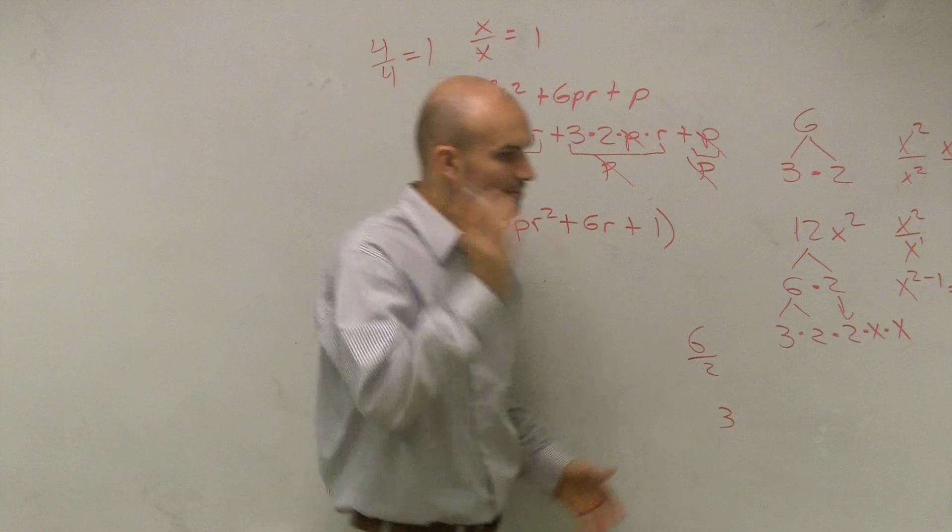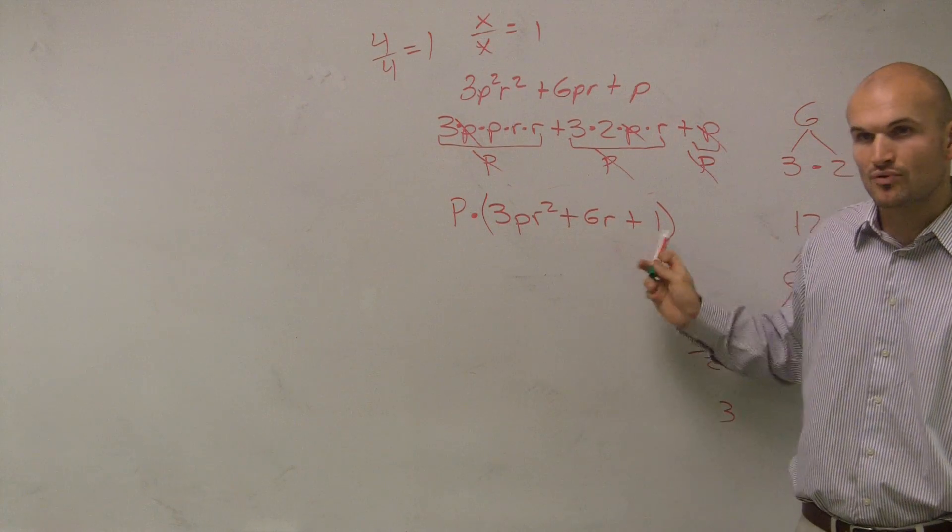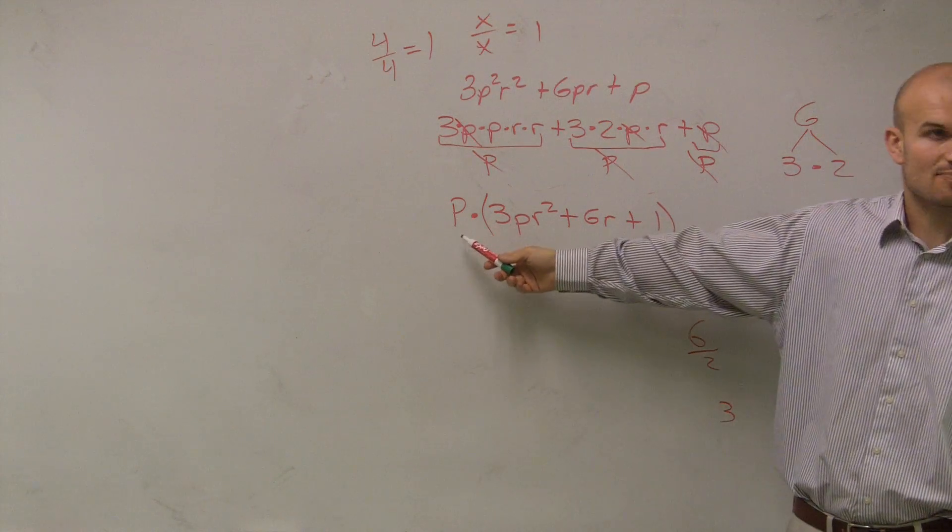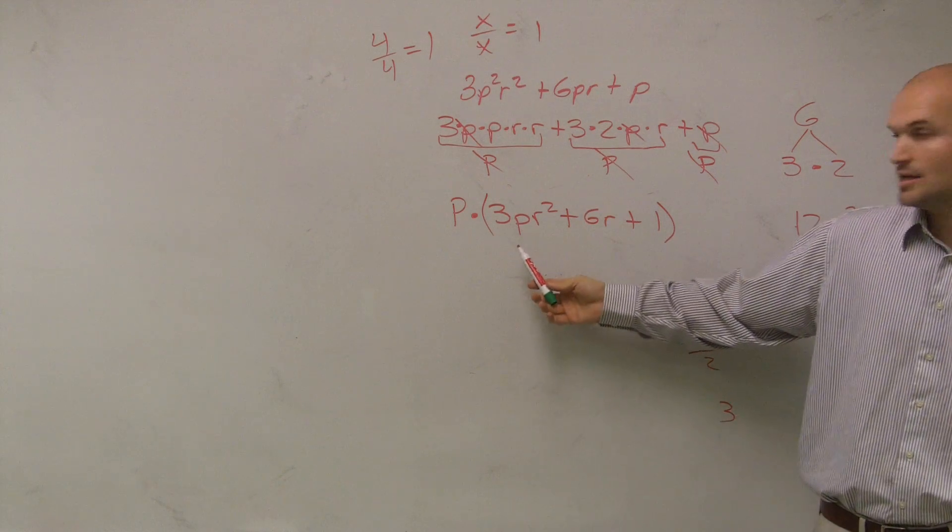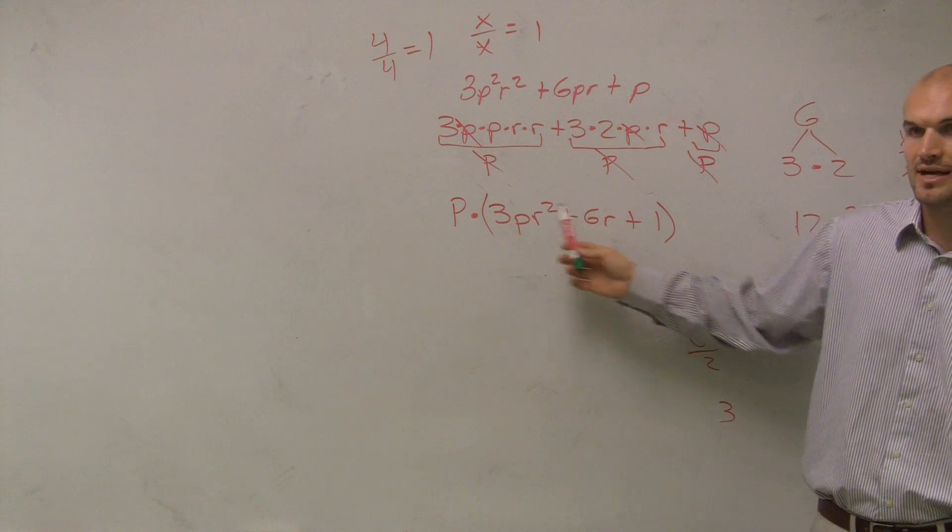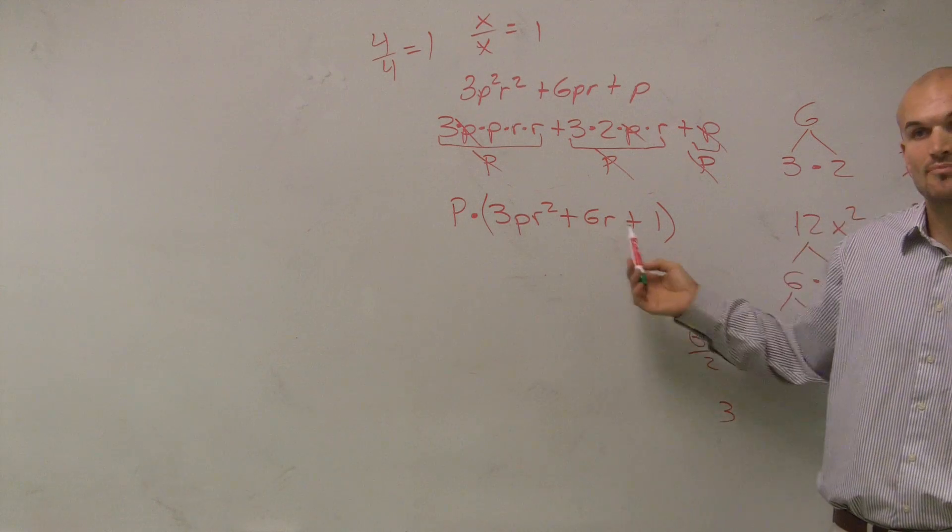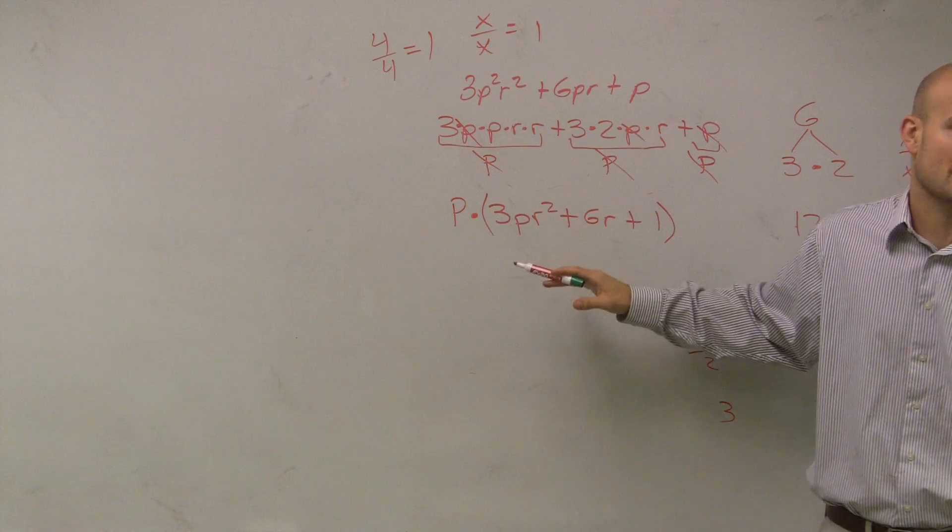Now the next thing, remember, factorization says the product of two prime factors. So that means these have to be prime factors. What I mean by a prime factor, we obviously know that p is prime. But is this a prime factor as well? Do all three of these terms have anything else in common? Nope. So therefore, that is a prime factor as well. So now I've rewritten this problem as a set of two prime factors.